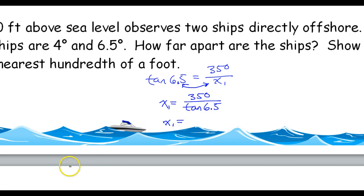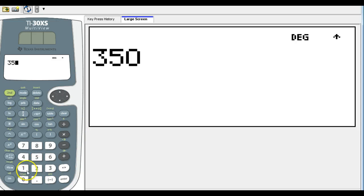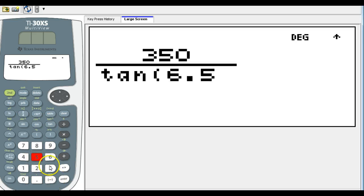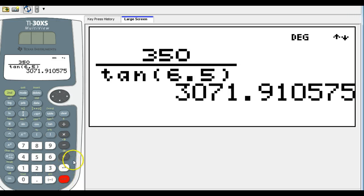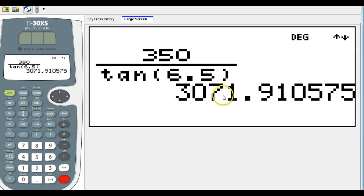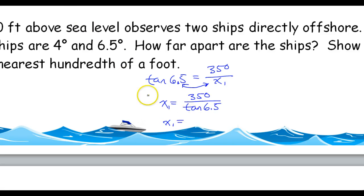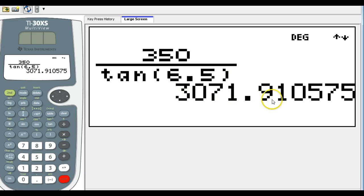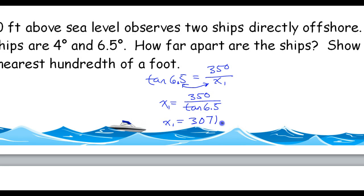Putting 350 over tangent of 6.5 into the calculator gives that first distance: x1 equals 3,071.91 feet.